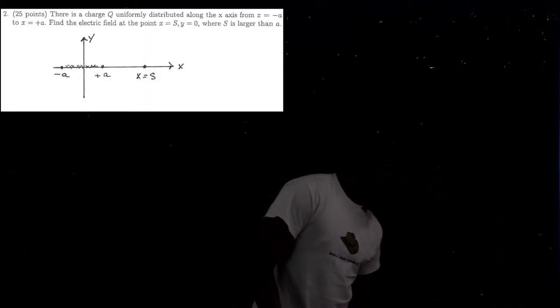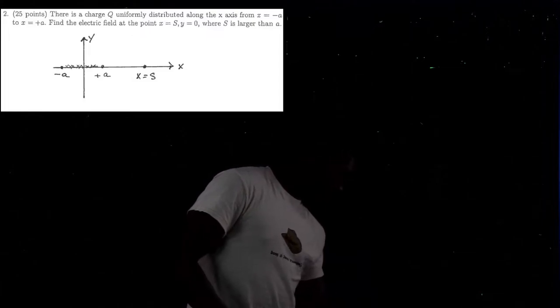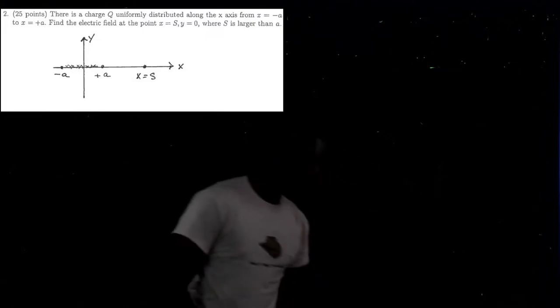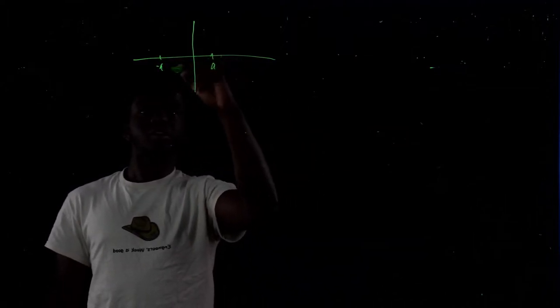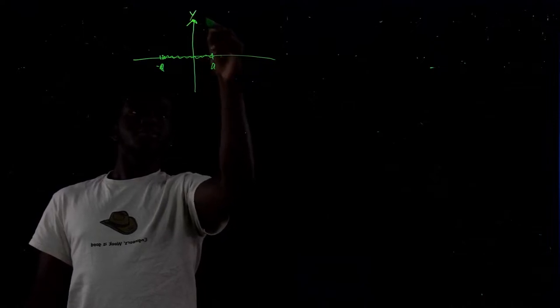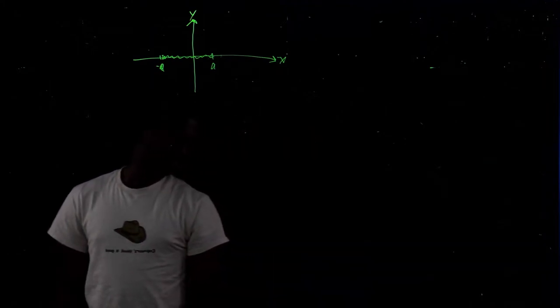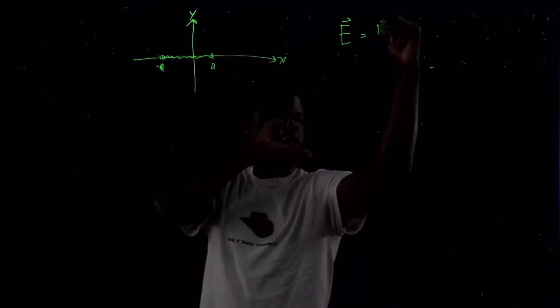Moving on to number two: a charge Q is uniformly distributed along the x-axis from x equals negative a to x equals positive a. Find the electric field at the point x equals s, y equals zero, where s is larger than a. The formula for electric field is E equals k q over r squared, and differentially, dE equals k dq over r squared.